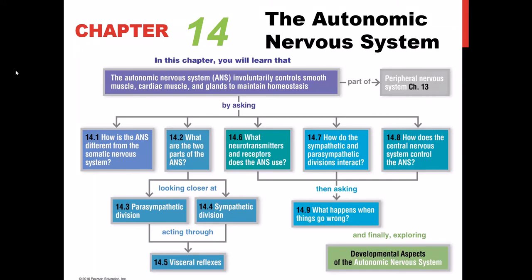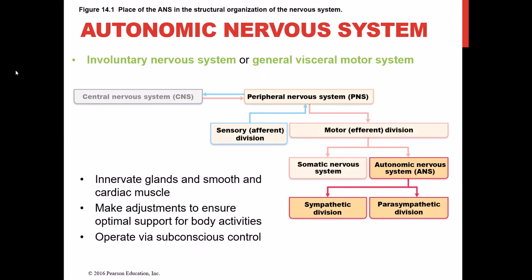Welcome to chapter 14, which focuses on the autonomic nervous system. If we look at where the autonomic nervous system sits in relation to the rest of the nervous system, you'll see it sits as part of the peripheral nervous system — so it's not the spinal cord or brain. It's not a sensory division; it's a motor division. There are two branches of the ANS: the sympathetic division and the parasympathetic division.